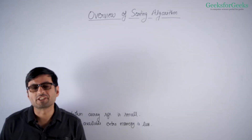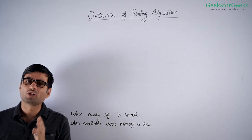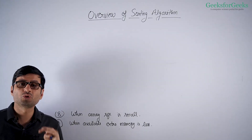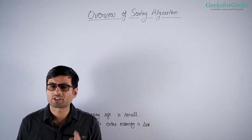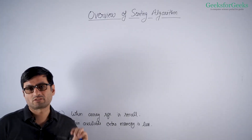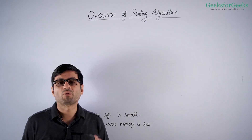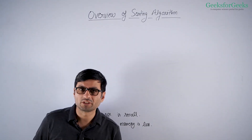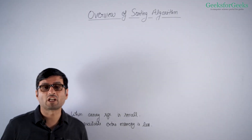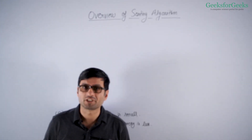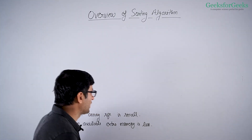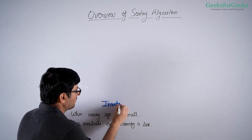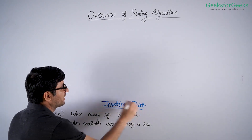The next special case is when your array is small — when you have a small number of elements to sort. For such cases, we have two general-purpose algorithms: selection sort and insertion sort. Among these two, insertion sort works best. Insertion sort is considered the best algorithm when you want to sort a small number of elements, say only 10 or 20. Most standard library implementations switch to insertion sort when the number of elements is really small.